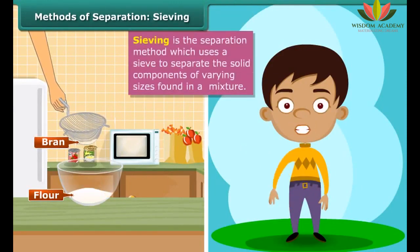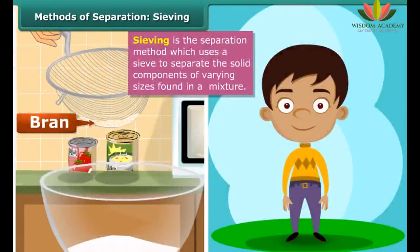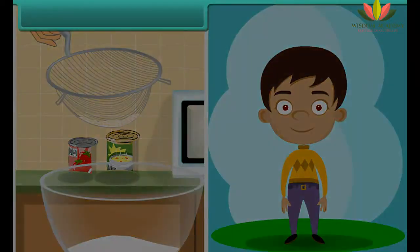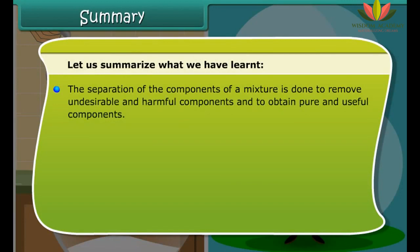Children, have you seen how your mother removes bran and other impurities from flour? They separate the coarse bran from the fine flour with the help of a sieve. This technique of using a sieve to separate the solid components of different sizes in a mixture is known as sieving. In this method, the mixture is placed on the sieve and shaken. Smaller particles pass through the holes of the sieve to the container placed below and are thus separated from the bigger particles that are retained in the sieve.